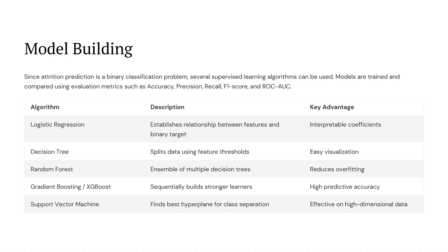Logistic Regression builds a relationship between features and the target. Decision Tree makes predictions using feature-based splits. Random Forest combines many trees to reduce overfitting. Gradient Boosting or XGBoost improves prediction power step by step. And Support Vector Machine separates classes effectively even in complex, high-dimensional data.